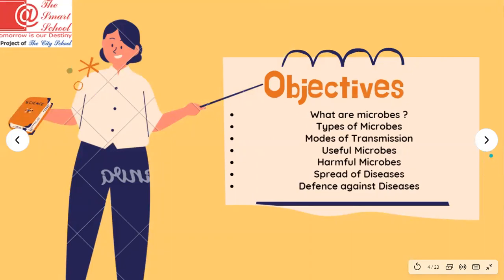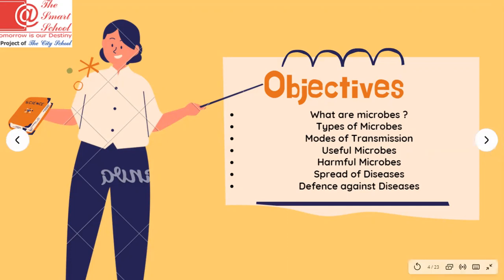We have objectives on your slide and we are going through each of them in detail. First, I will explain what microbes are, then give a brief introduction about the types of microbes. Then we will discuss the modes of transmission — the process through which microbes travel from one body to another. Finally, we will discuss useful microbes and harmful microbes, and the defense system we must develop against disease-causing microbes.